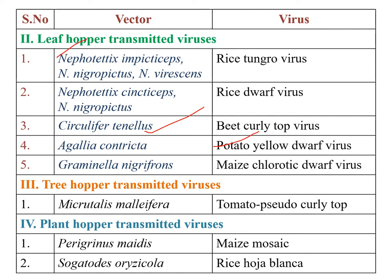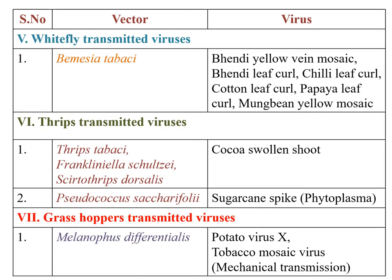Treehopper-transmitted viruses: Micrutalis malleifera transmits tomato pseudo-curly top disease caused by tomato pseudo-curly top virus. Planthopper-transmitted viruses: Peregrinus maidis transmits maize mosaic, and Sogata orizicola transmits rice hoja blanca. Whitefly-transmitted viruses: Bemisia tabaci is the most important species, capable of transmitting bhendi yellow vein mosaic, bhendi leaf curl, chili leaf curl, cotton leaf curl, papaya leaf curl, and mungbean yellow mosaic virus.